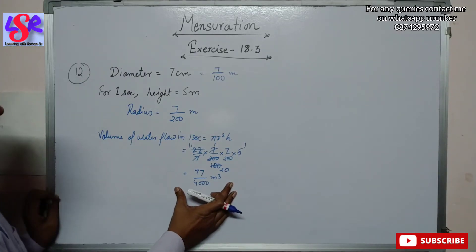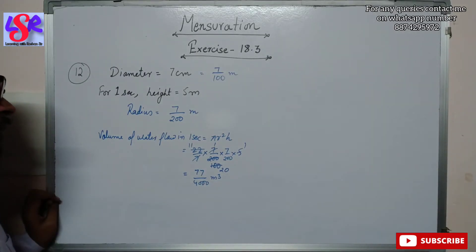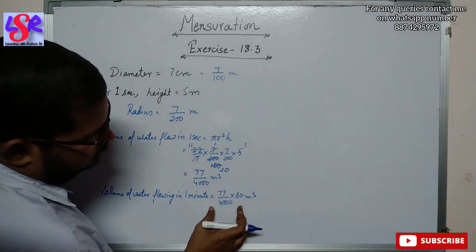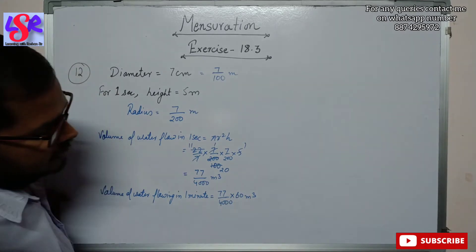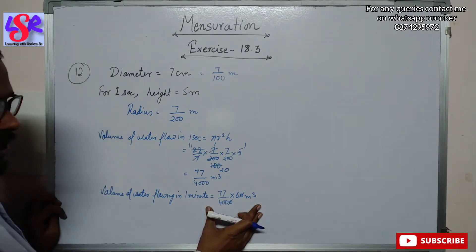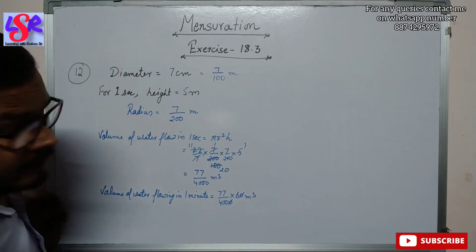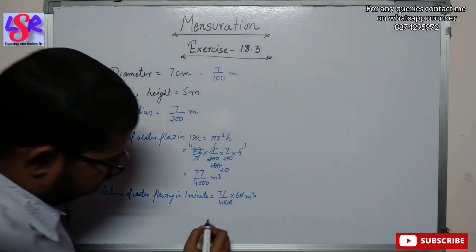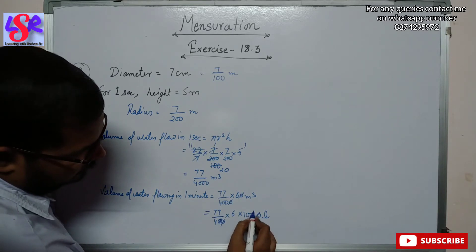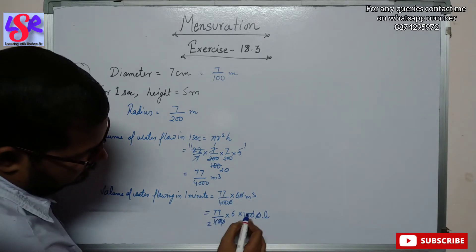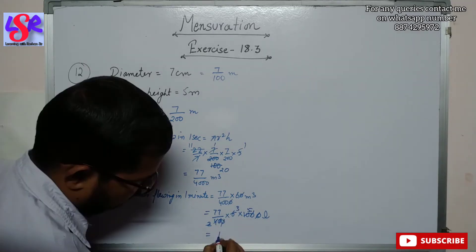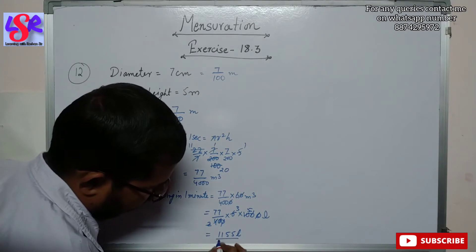Volume of water flowing in 1 minute = (77/4000) × 60. We convert m³ to litres by multiplying by 1000. After cancelling zeros and simplifying — 2 goes 2 times, then 5 times, then 3 times — we get 1155 litres as the answer for the first part.